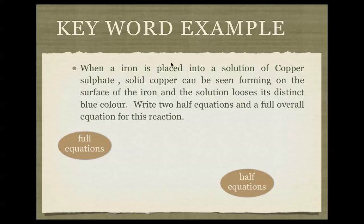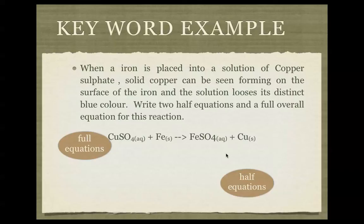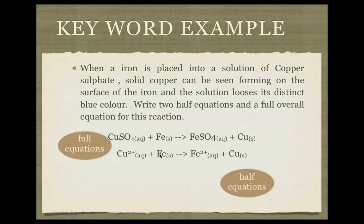Here is a keyword example question: When iron is placed in a solution of copper sulfate, solid copper forms on the surface of the iron and the solution loses its blue colour. Write two half equations and a full overall equation. The overall equation involves Cu²⁺ and solid iron forming Fe²⁺ and solid copper. Removing the spectator sulfate ion gives: Cu²⁺ + Fe(s) → Fe²⁺ + Cu(s).